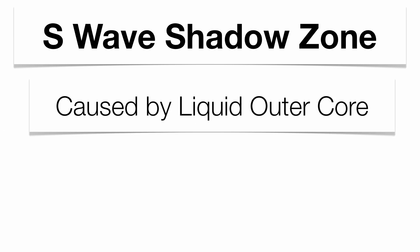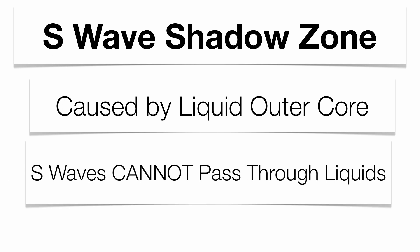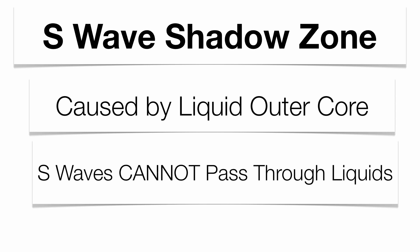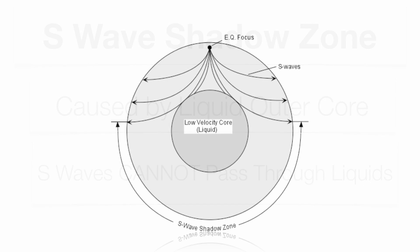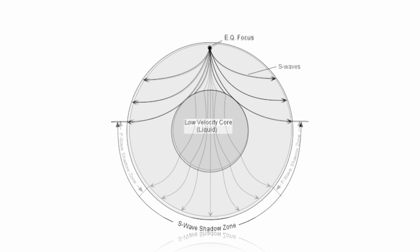The S wave shadow zone is a little bit more prominent, and this is caused by that liquid outer core absorbing our S waves. S waves cannot pass through liquids, so that outer core absorbs them, giving you a very large zone exactly opposite the epicenter. You can see the massive zone that does not receive S waves simply because of the liquid outer core. Putting the P wave shadow zone on top of the S wave shadow zone, you can see where P waves and S waves are received, where only P waves are received, and where no waves are received at all.